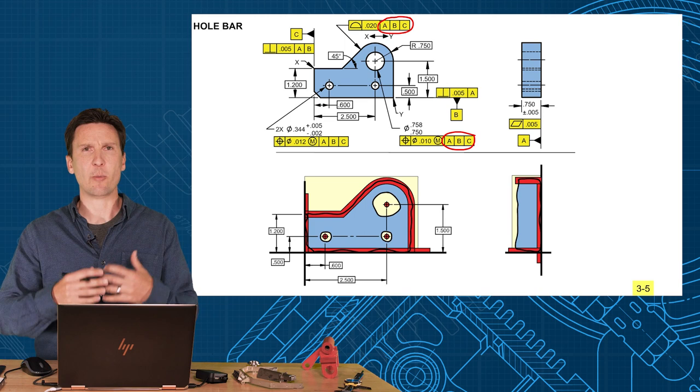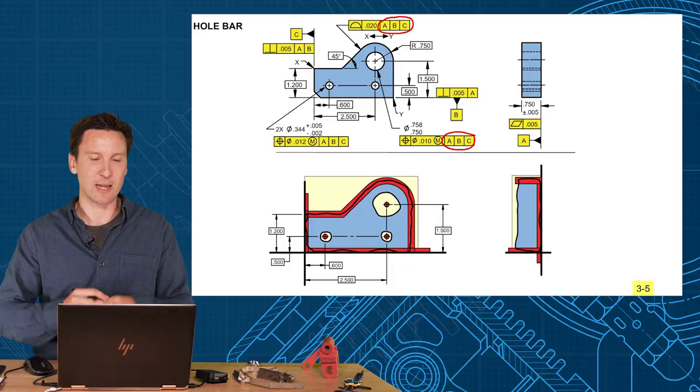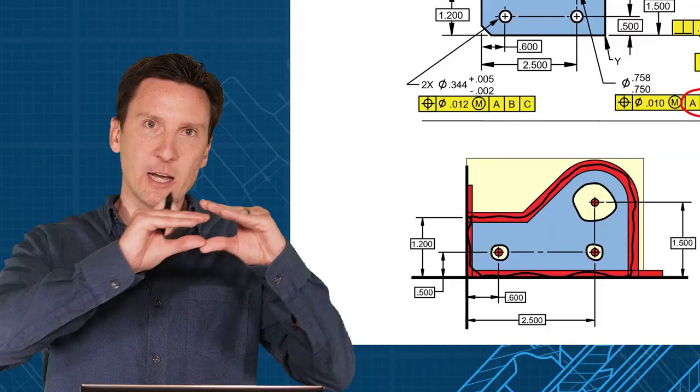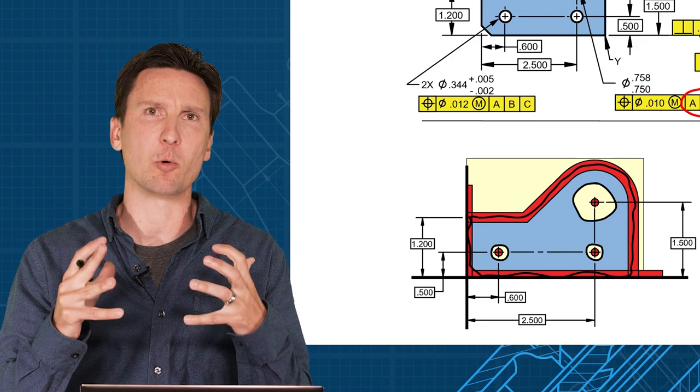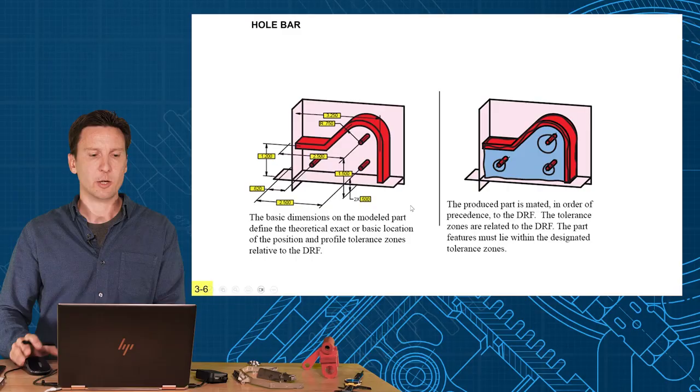Every hole, every slot, every surface will get controlled relative to a datum reference frame. And we create these three-dimensional geometrically shaped tolerance zones. I think that's where geometric tolerancing gets its name, is you create geometric shaped tolerance zones in which your features have to lie within. You get much more robust control on your parts this way.